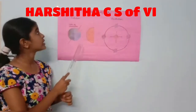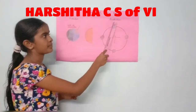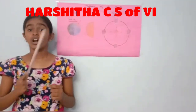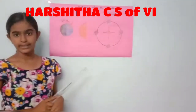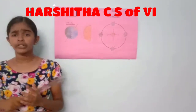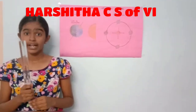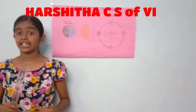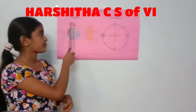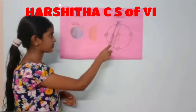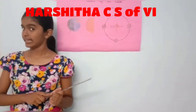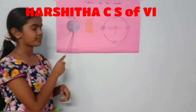The two motions of the earth are rotation and revolution. Rotation is the movement of the earth on its own axis. Revolution is the movement of the earth around the sun in a fixed path. For one rotation, the earth takes one day, and for one revolution, the earth takes 365 days. Night and day are caused due to rotation. Seasons are caused due to revolution. The circle that divides our earth into day and night is called the circle of illumination. Thank you.